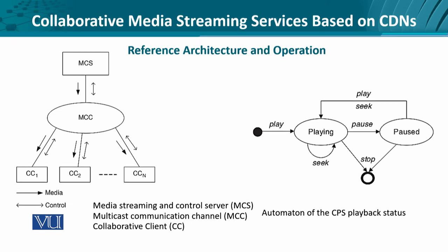In CDNs, the reference architecture can be thought of as a streaming and control server at the top, which uses communication services. It can be unicast, multicast, or broadcast. Since we are talking about collaboration, it has to be at least multicast. Each user has a client entity known as the collaborative client. As seen in the visual, control messages are being sent from the collaborative client and the media is being delivered to the client in a synchronous manner.